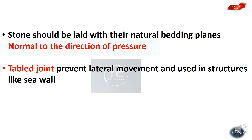The table joint prevents lateral movement and is used in structures like sea walls. Table joint is used to prevent lateral movement in heavy structures such as sea walls.